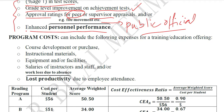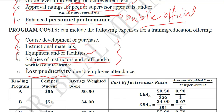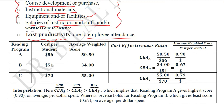The costs include routine items such as course development or purchase, instructional materials, equipment or facilities, and instructor salaries. An important additional cost is lost productivity due to employee absence during training days, since an employee away from the office cannot complete their regular work. This loss of productivity is appropriately included on the cost side of the analysis.